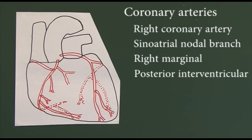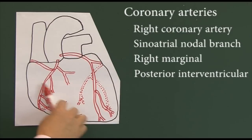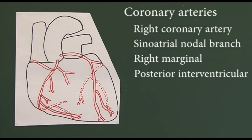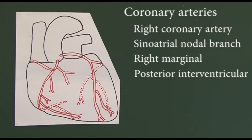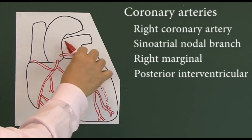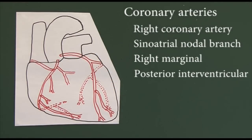The myocardium is dependent on the blood supplied by the coronary arteries for its oxygen, nutrients, and removal of metabolic waste products. Despite the fact that the heart is full of blood, the myocardium is not getting its oxygen from the blood going through the chambers — it is dependent on the coronary arterial system being patent. These arteries aren't very wide relatively, and the level of collateral circulation is not that extensive.